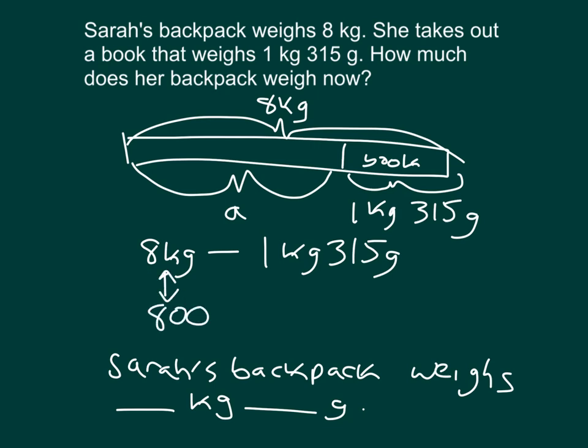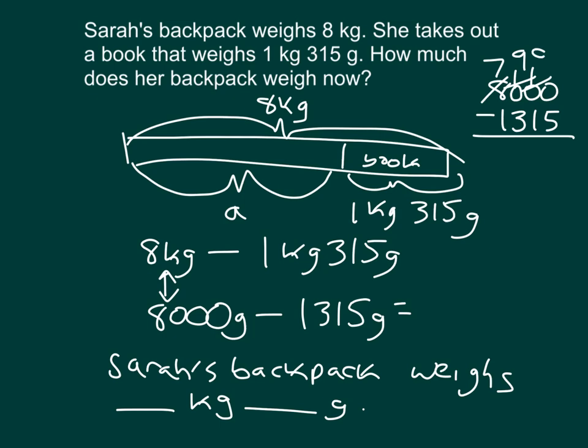8 kilograms is how many grams? Right, 8,000 grams. 1 kilogram along with 315 grams is 1,315 grams. If I write out that subtraction problem there, can you do that subtraction problem? Some of you might have paused the video. Some of you might have just continued to watch where it is that that would be 6,685 grams. Renaming that, remember that 1,000 grams equals 1 kilogram. So that 6,685 grams equals 6 kilograms. That's in the thousands place there. And along with 685 grams.